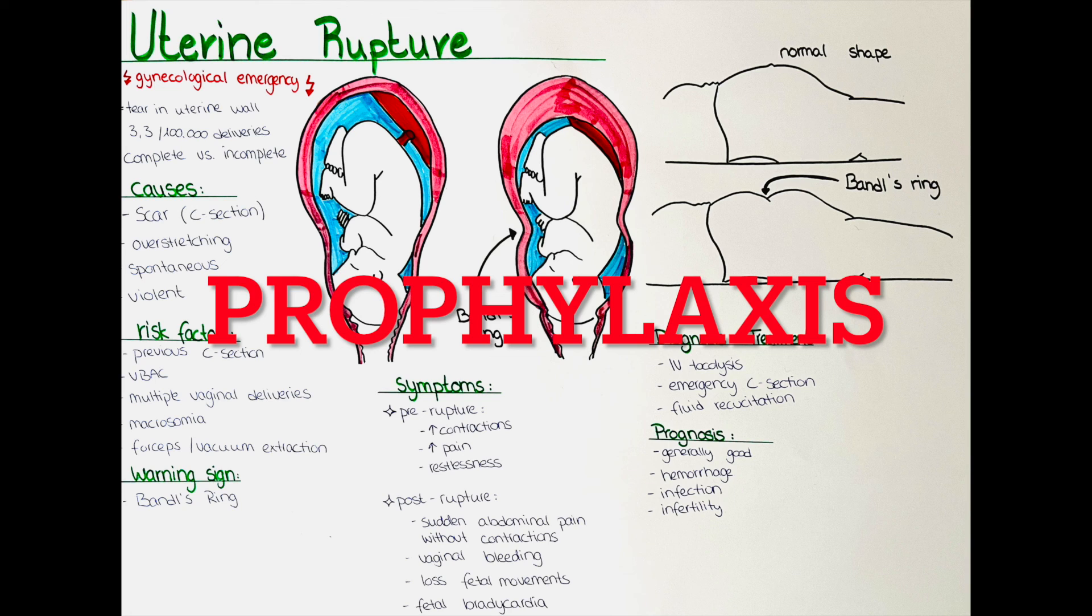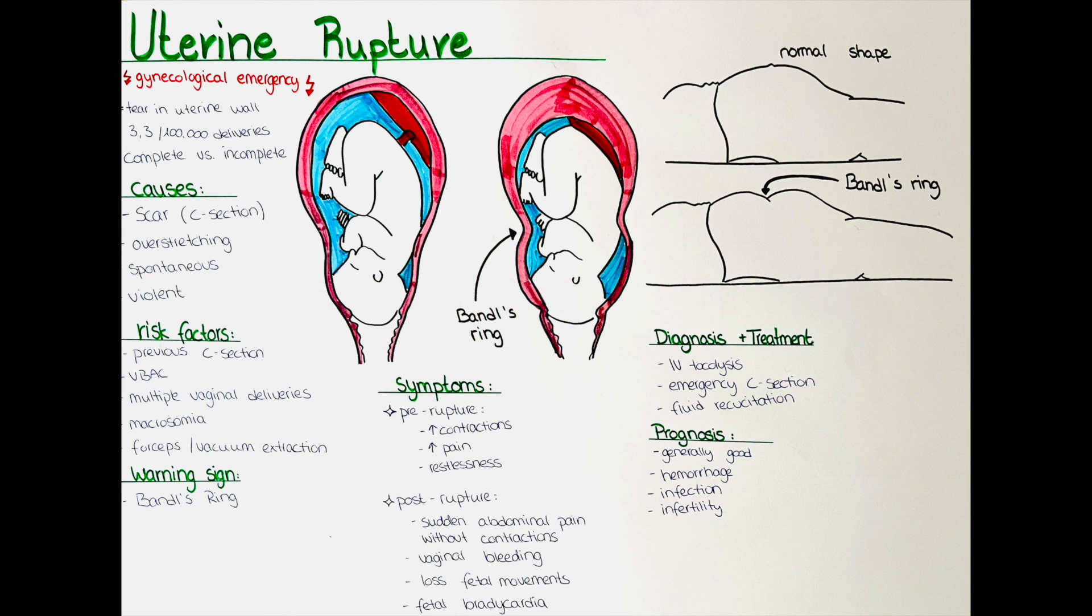Is there any prophylaxis? Prophylaxis to prevent uterine rupture includes avoiding VBAC if the woman has a high risk of uterine rupture, and careful monitoring during labor and delivery for women who are at risk of uterine rupture.